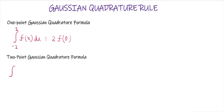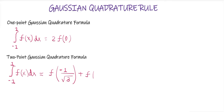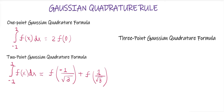The two-point Gaussian quadrature formula is: integration from minus one to one of f(x) dx is equal to f of minus one by root three plus f of one by root three. How we will find this will be clear when we solve an example.